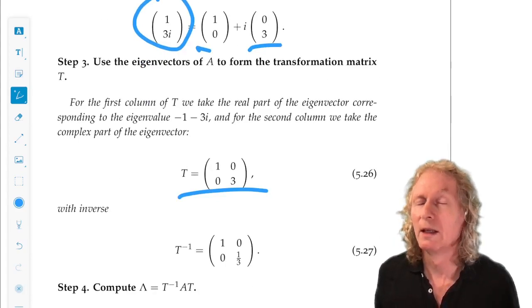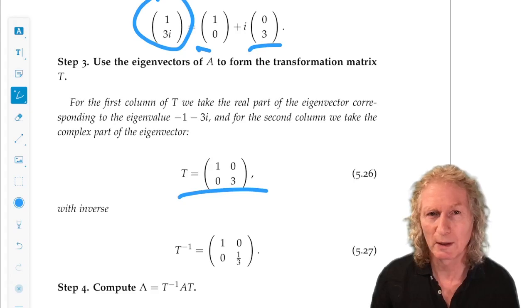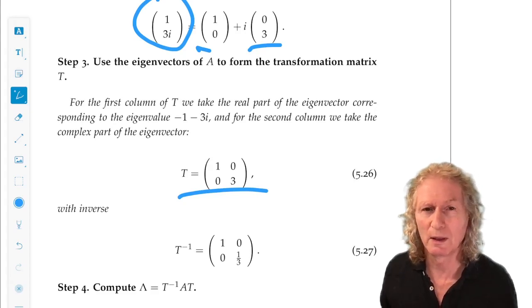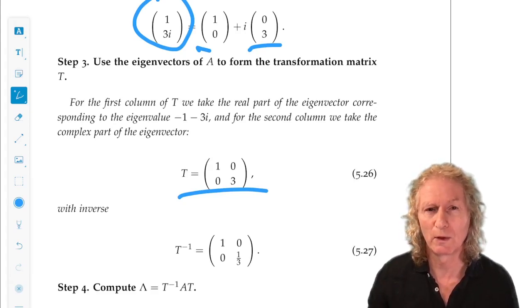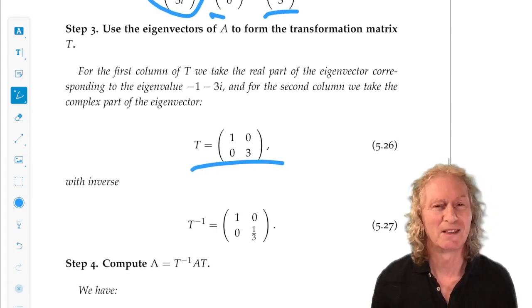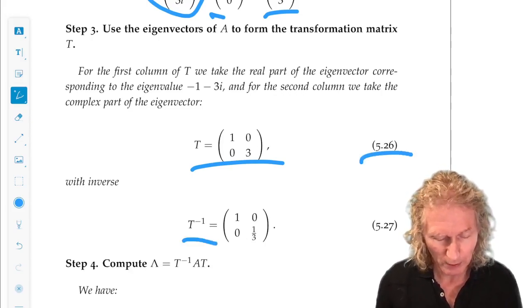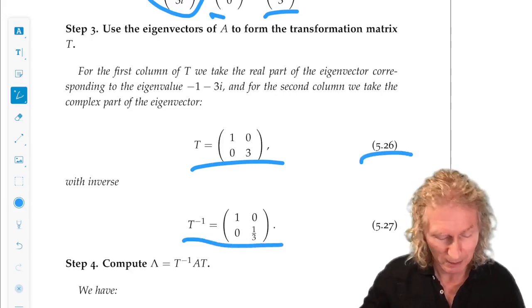Why do we do that? An interesting question, but I'm just presenting you a technique, a computational technique, that for 2 by 2 systems is not hard to deal with. So, T is diagonal in this particular case. So, the inverse is pretty easy. You can check that in your head.